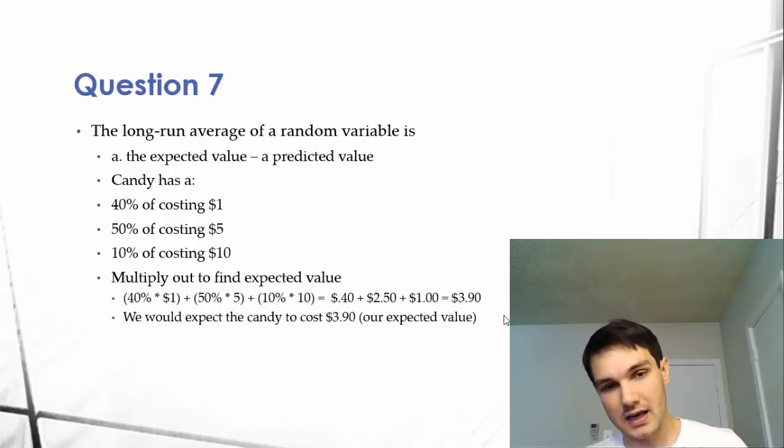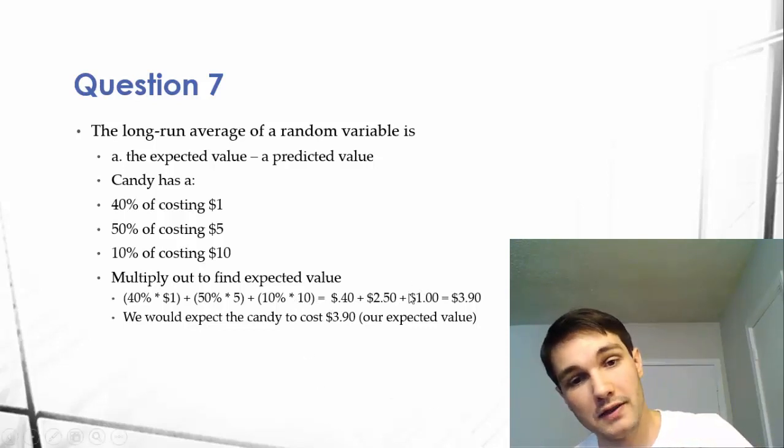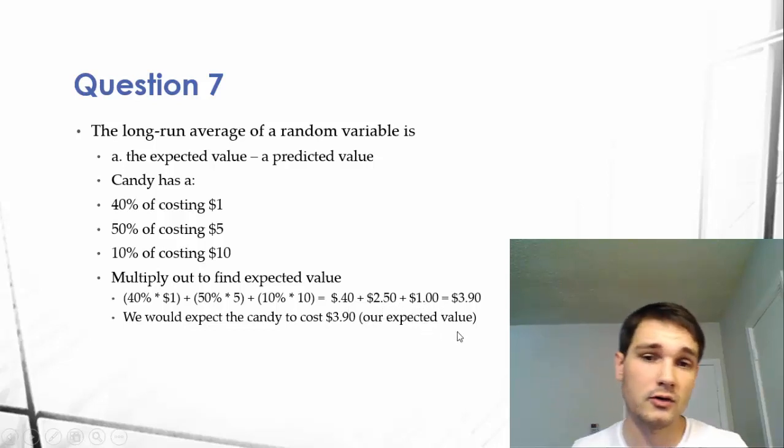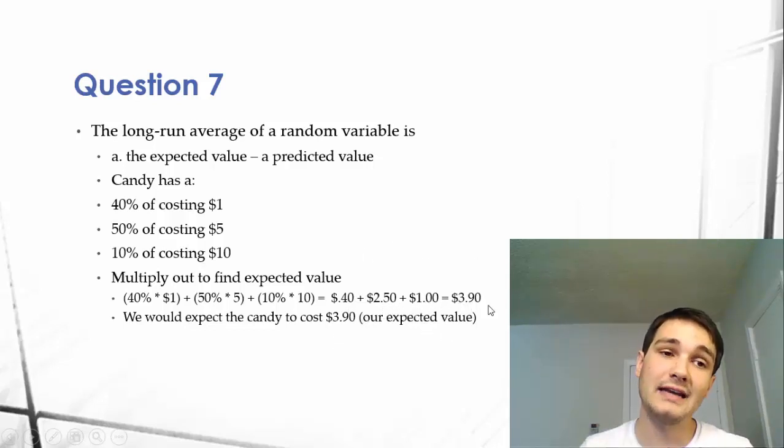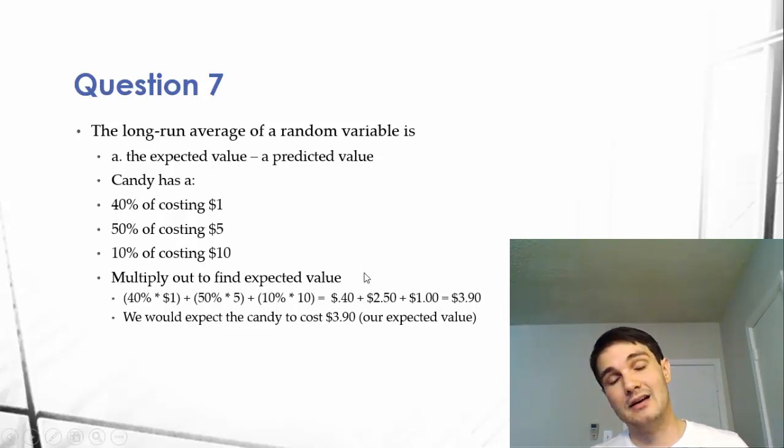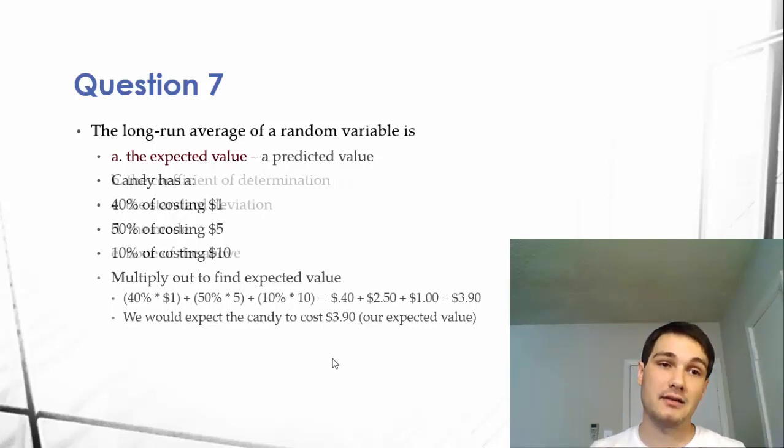in this population of candies. So we multiply that out and we'd get $0.40, $2.50, and $1. Add that all up, you get $3.90. That would be our expected value if we randomly purchased any candy. So in the long run, an average of a random variable will be its expected value.